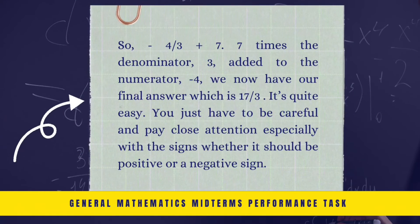So negative 4/3 plus 7. 7 times the denominator 3, added to the numerator negative 4, we now have our final answer, which is 17/3. It's quite easy. You just have to be careful and pay close attention, especially with the signs, whether it should be positive or negative sign.